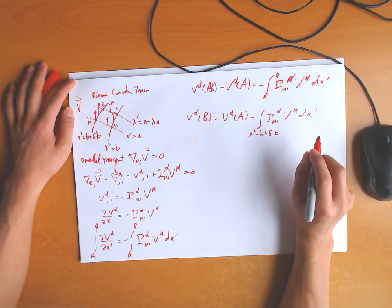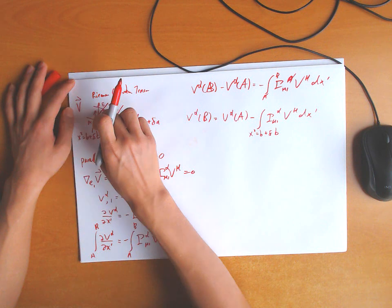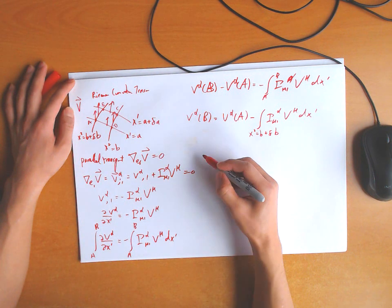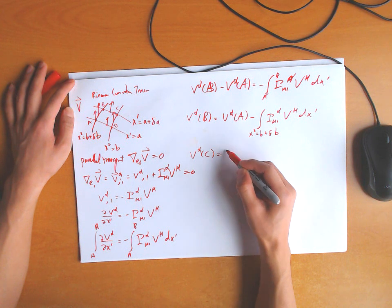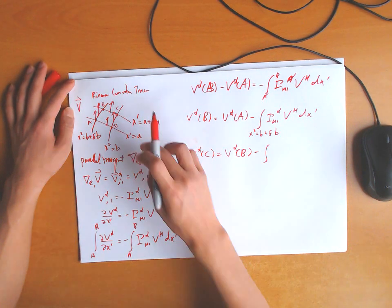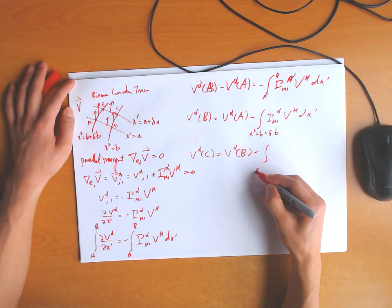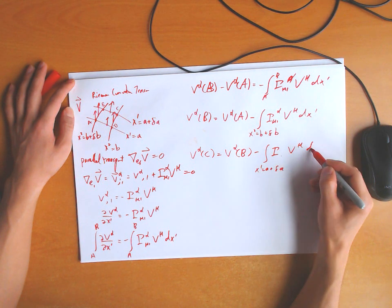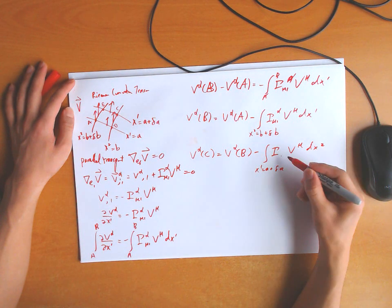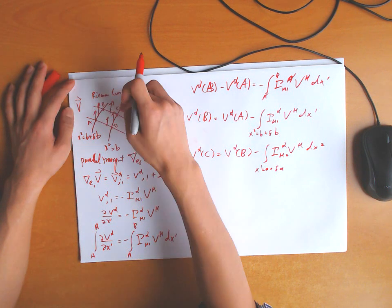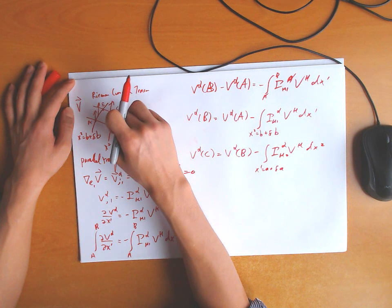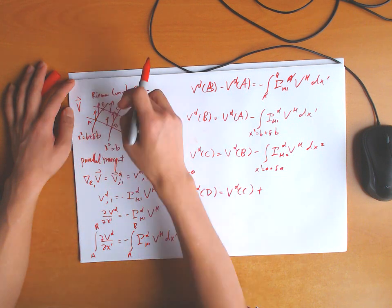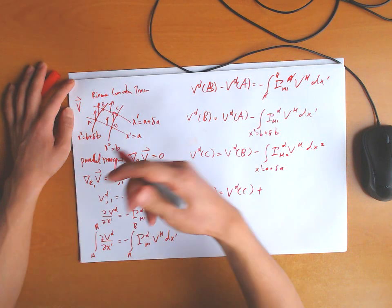We now have what we get from integrating from a to b. We parallel transported the vector, so now we do b to c. By analogy we can get that this is just along x2 with the Christoffel symbol. Then we go from c to d — by analogy again. We get a plus sign because we're going backward now, so the sign flips: negative then positive.